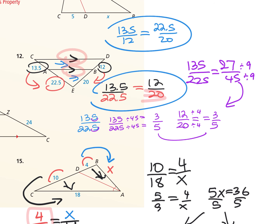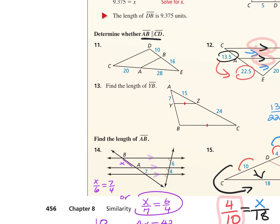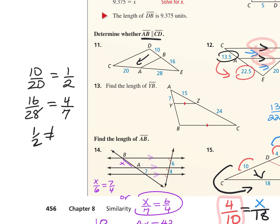For number 11, to determine if the lines are parallel I need to check if the sides are proportional. Doing top to bottom: 10 over 20 simplifies to 1 half; 16 over 28 — dividing both by 4 — gives 4 to 7. Since 1 half is not equal to 4 to 7, the lines are not parallel.